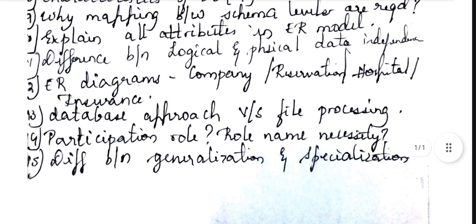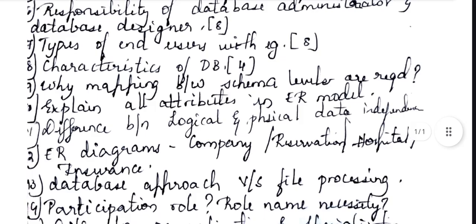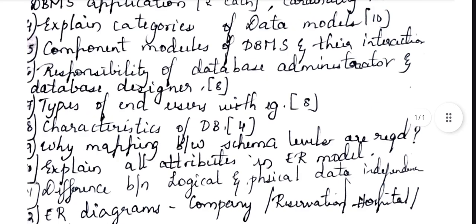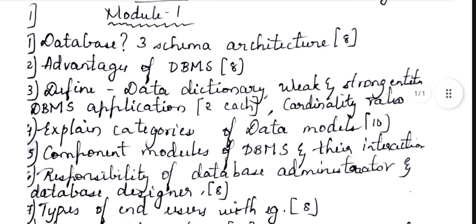The last question is: differentiate between generalization and specialization. There is a diagram for that — give an example and explain. That is it for this module — 15 questions in total. No need to go anywhere extra, as I have covered the June/July 2024 paper along with PYQs. I will be posting the next module very shortly. The PDF is available in the description box.